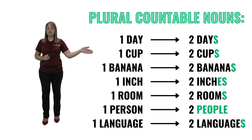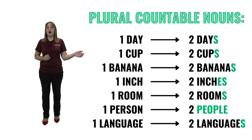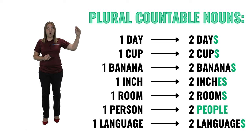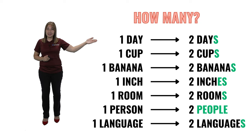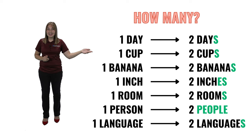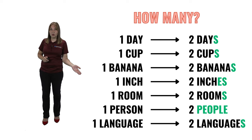More examples of countable nouns: one inch, two inches; one room, two rooms; one person, two people; one language, two languages. So for all these nouns, the question would be 'how many': how many days? How many cups? How many bananas? How many inches? How many rooms? How many people? How many languages?